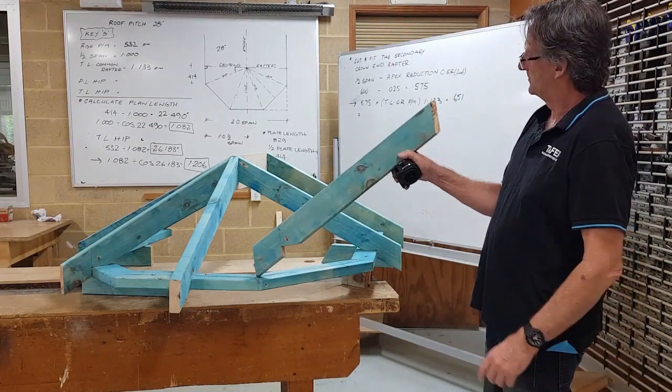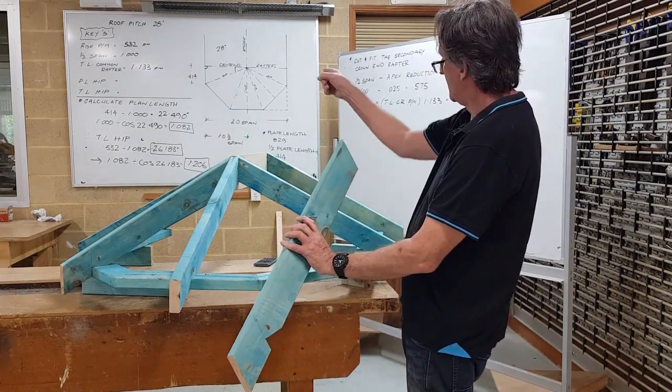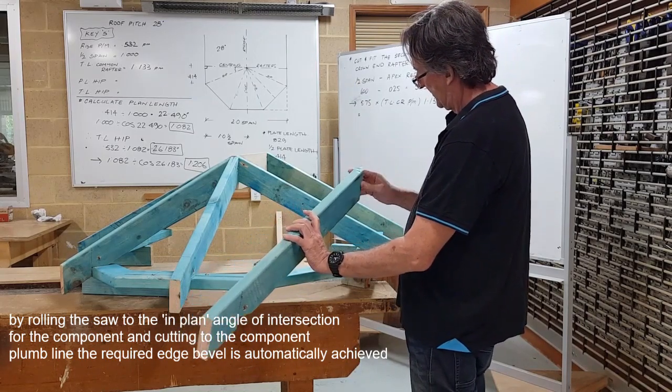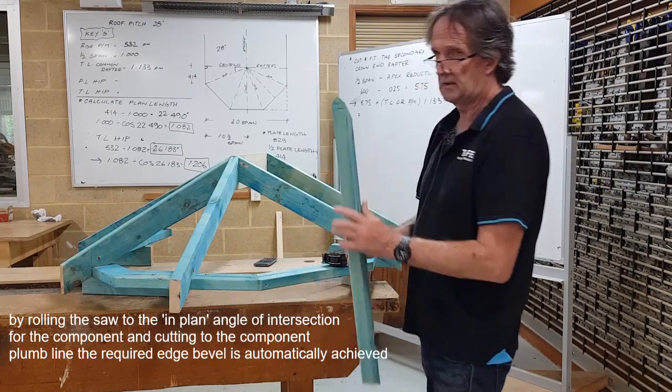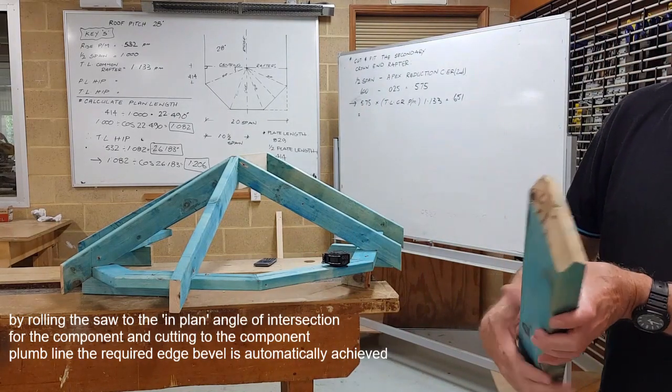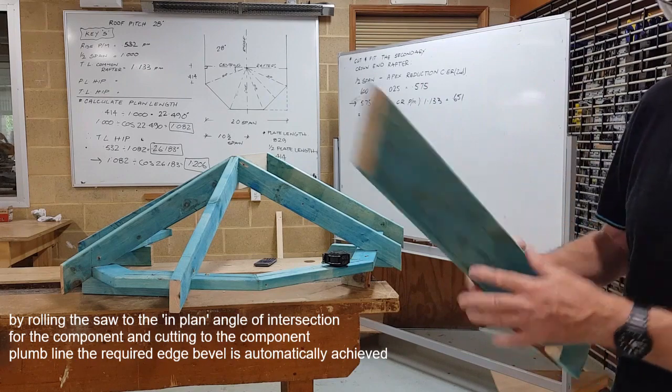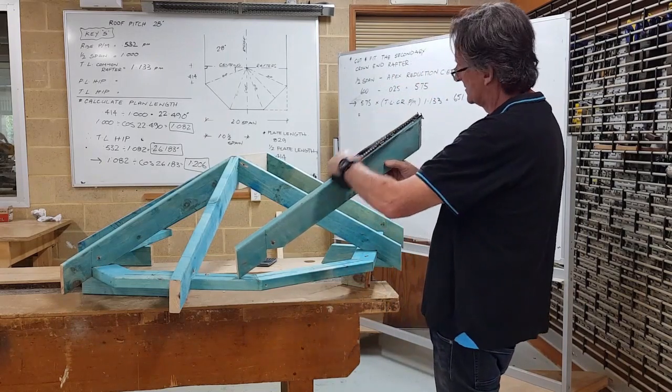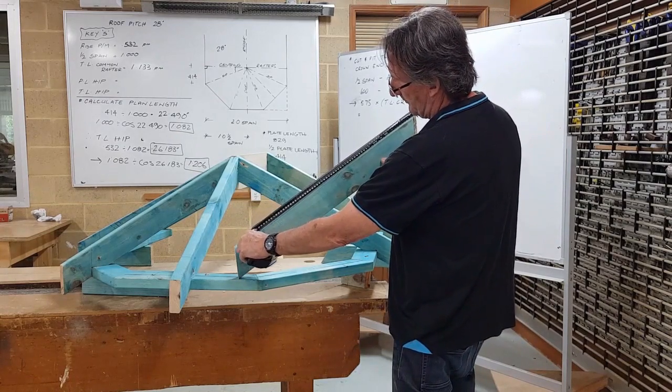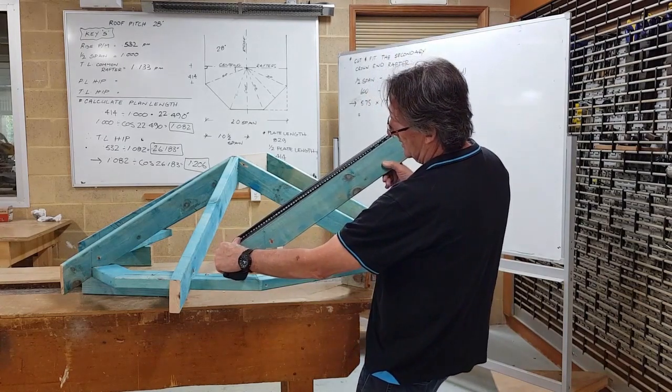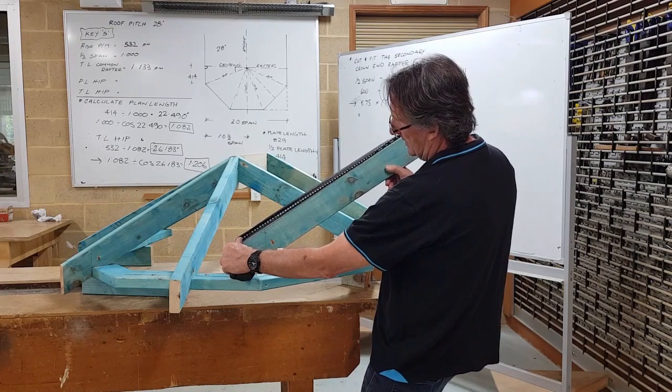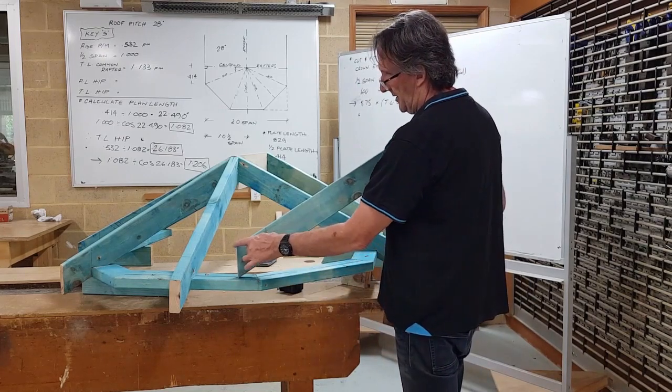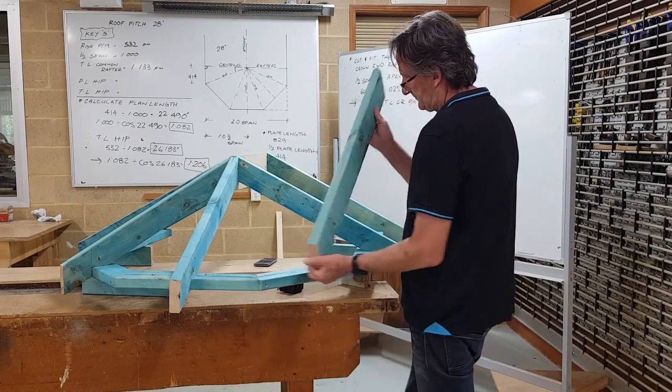Here's the component that I've cut. It's a rafter so it's the 28 degree rafter cut. It's a secondary crown end so the saw was rolled over to 45 degrees when I made those cuts. So straight up the plumb cut on 45 degrees. I've then hooked my tape on the long point apex, come down to the upstand which you can probably see there, 651 exactly. 651 plumb down, done the bird's mouth.